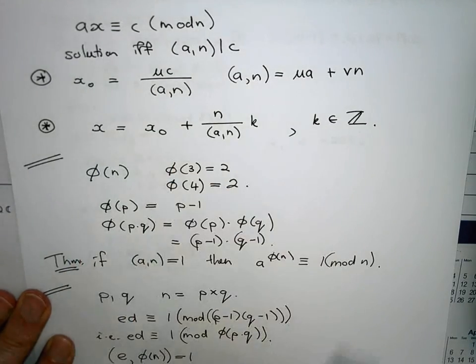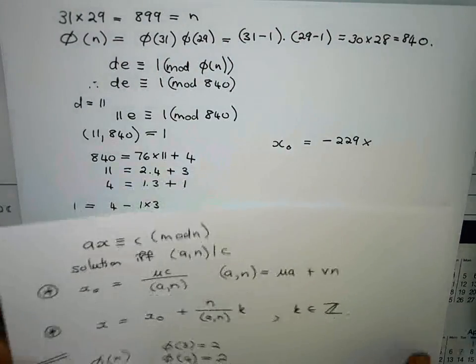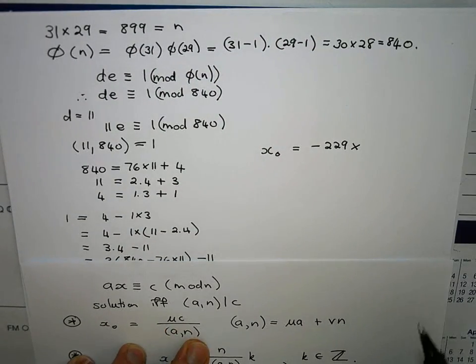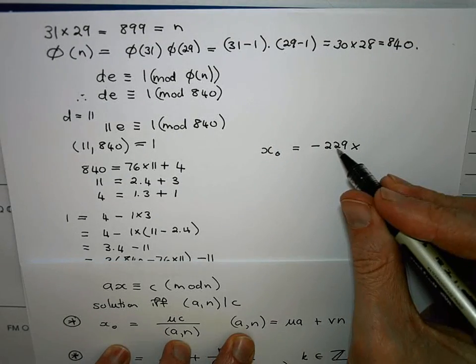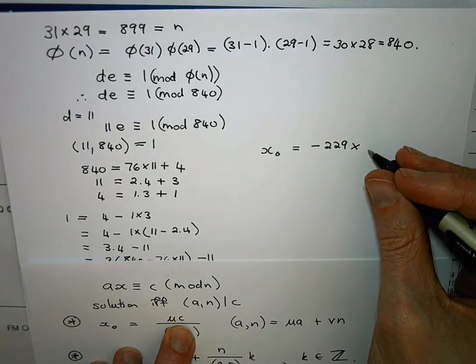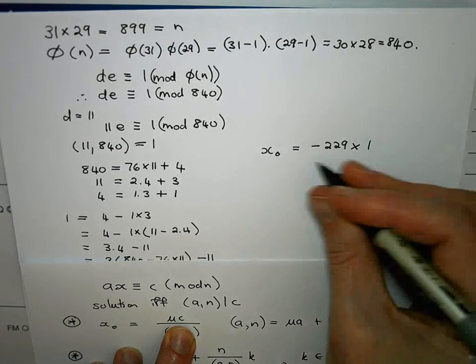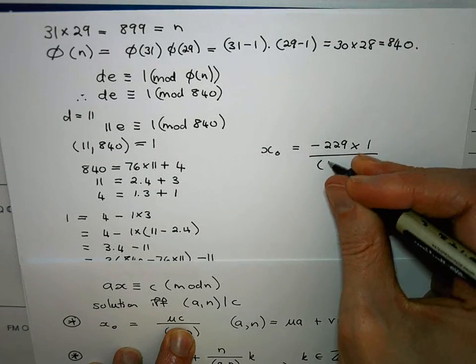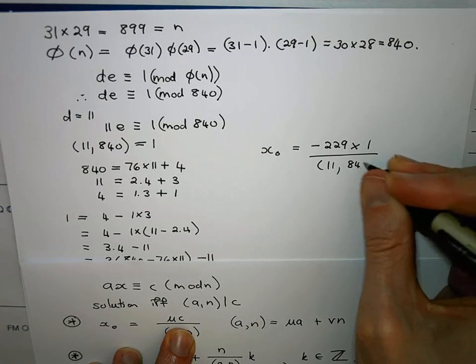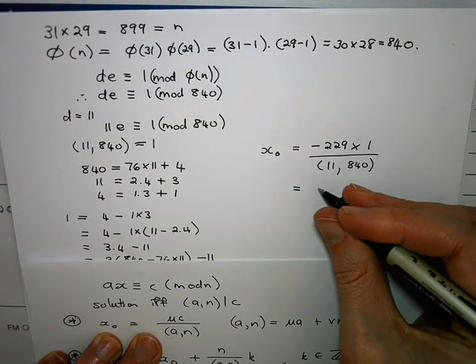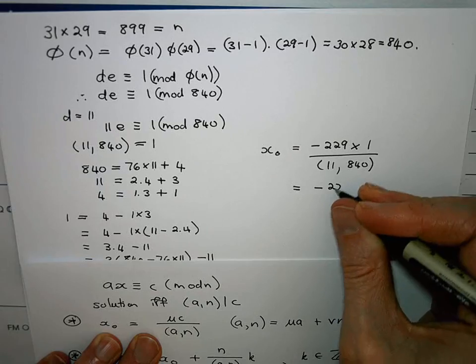When we express the GCD of a and n, in this case our d and our φ(n), in terms of these two. So here I'm using, there's my u, my c is a 1, and the GCD of these two guys is, well let's do it in two steps, the GCD of 840 and 11 is simply 1 so this is simply going to give me minus 229.